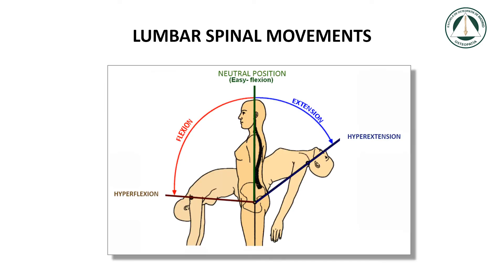Before approaching this topic, it is necessary to have a common vocabulary. The upright anatomical position is the neutral position, the easy flexion of American osteopaths. The forward lean movement is flexion. The final flexion range is hyperflexion. The backward tilt movement is extension. The final extension amplitude is hyperextension.